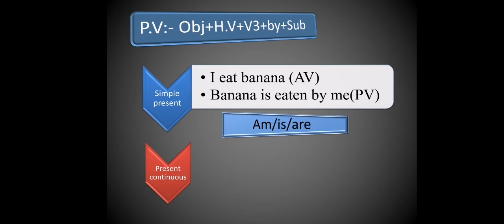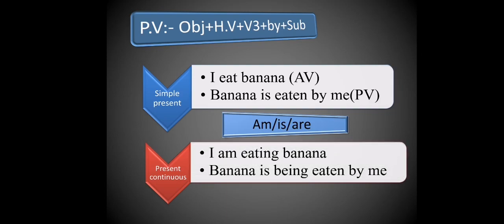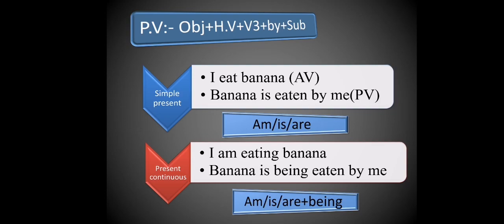Present continuous example: 'I am eating banana.' Object is 'banana.' Helping verb for present continuous is 'is.' But since it is continuous tense, we add the extra word 'being.' Then V3 form 'eaten,' then 'by me.' So: 'Banana is being eaten by me.' For simple present: 'Banana is eaten by me.' For present continuous: 'Banana is being eaten by me.'